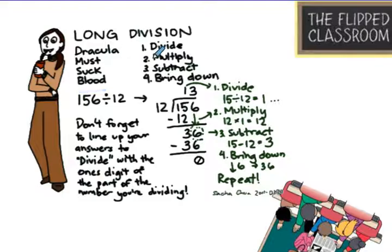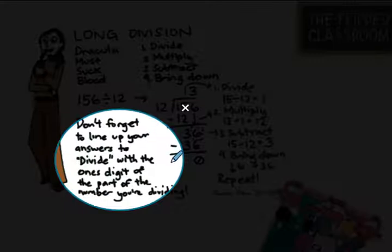But this one, same thing: divide, multiply, subtract, and bring down. I also found it very helpful that we should not forget to line up our answers when we divide with the ones digit of the part of the number you're dividing. When we do that, we're going to make sure that everything in the hundreds place stays in the hundreds place, so that when we get to the ones place, we're dividing by just the ones place.